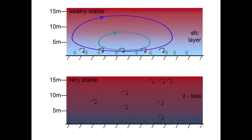In the very stable case shown in the lower panel, the stratification is so strong that even eddies close to the surface do not directly interact with it. Stratification becomes a much greater constraint on vertical eddy size than the ground surface does. This case is sometimes casually referred to as the Z-less case, since the height above ground, Z, no longer determines the vertical size of the eddies.